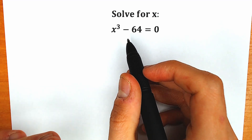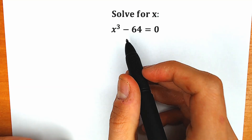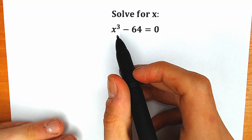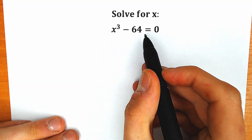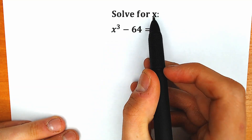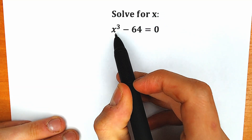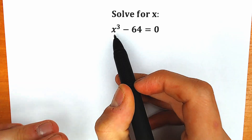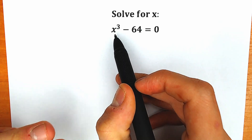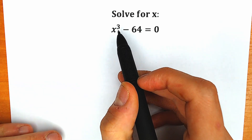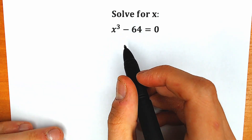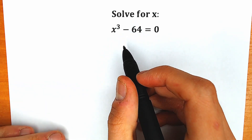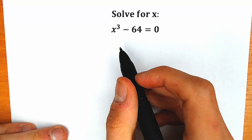Today we have a very interesting — I would say a quick and relaxing algebra challenge: x-cube minus 64 equal to 0, and we need to find x. If you have your solution, your answer, write it down in the comment section, and in a few minutes we will check our answer — it will be really interesting.